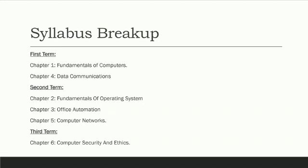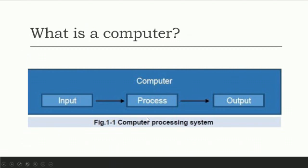During second term we will be covering three chapters: fundamentals of operating system, office automation which is basically practical based chapter, and then third one is computer networks. And during third term we are left just with one chapter which is computer security ethics.